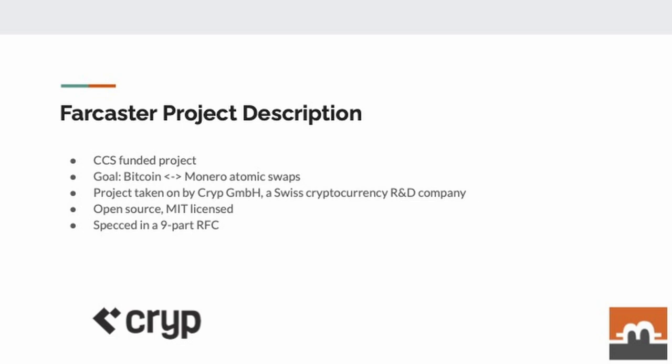Farcaster is a CCS-funded project. The goal of the CCS was to implement Bitcoin-Monero Atomic Swaps. The project was taken on initially by Krip GmbH, a source cryptocurrency R&D company which I worked for. It's open source and MIT licensed, and we specced out the entire protocol and software in a nine-part RFC.